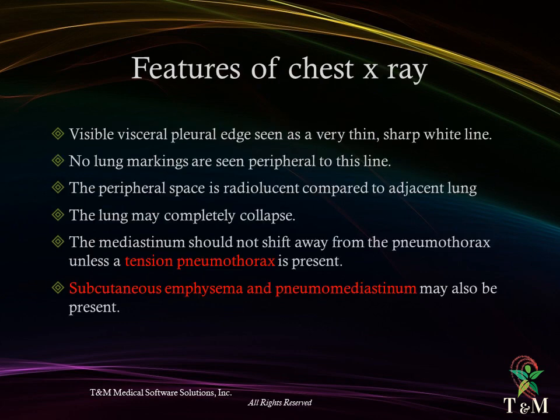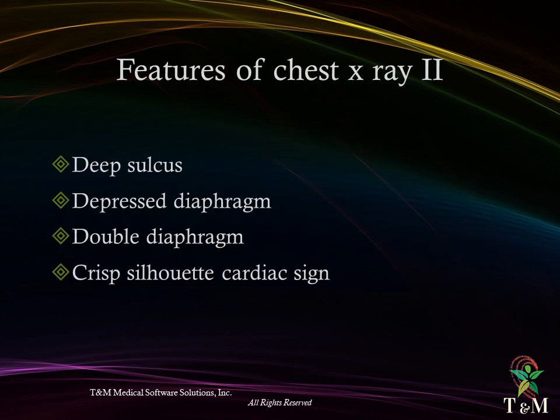Features on chest X-ray include a visible visceral pleural edge seen as a thin sharp white line, no lung markings peripheral to this line — the jet black sign — where the peripheral space is radiolucent compared to adjacent lung. The lung may completely collapse. The mediastinum should not shift away from a pneumothorax unless tension pneumothorax is present. Subcutaneous emphysema and pneumomediastinum may also be present.